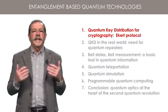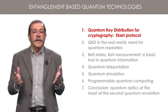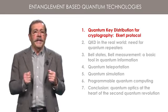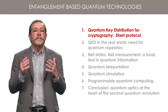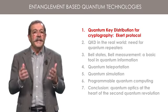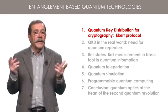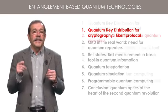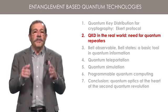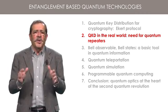In section one, you will discover the Eckert protocol for quantum key distribution for cryptography. It is a direct application of the experiments with polarization entangled photons seen in the previous lesson, so you may want to have a look back at that lesson. In section two, I will tell you of the current limitation of that method, which can hardly extend beyond 100 km.